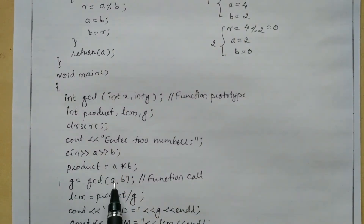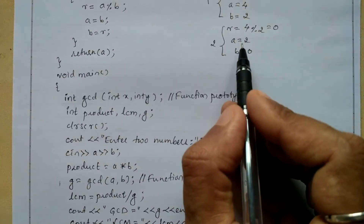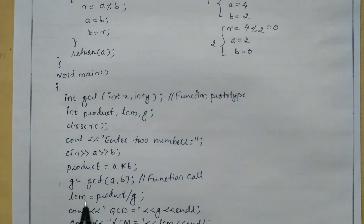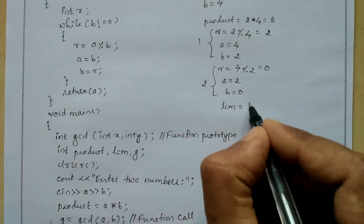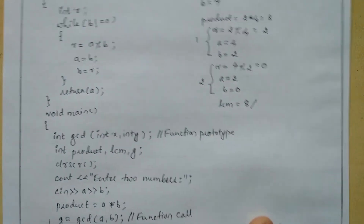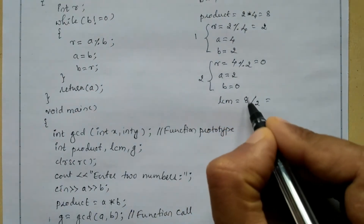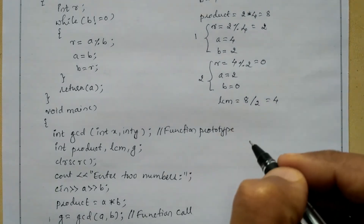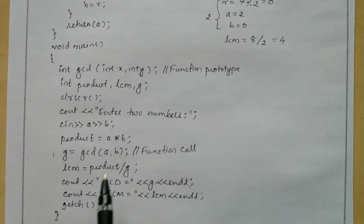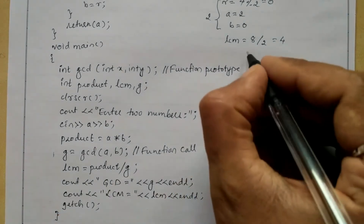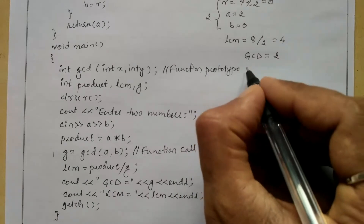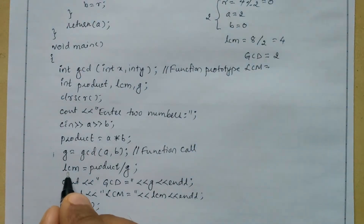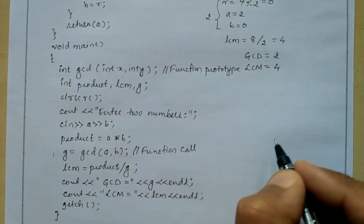The function call returns 2, which is stored in g. Next, lcm equals product divided by g: product was 8 and g is 2, so 8 divided by 2 equals 4. Four is stored in lcm. The program then prints: GCD is equal to g — the value stored in g is 2. Because of endl, the cursor moves to the next line and prints: LCM is equal to lcm — the value stored in lcm is 4.